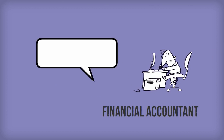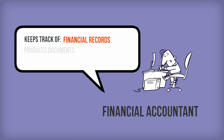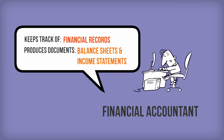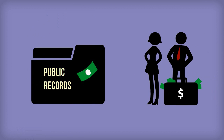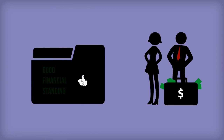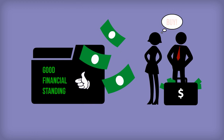As a financial accountant, Jim keeps track of the company's financial records and produces documents like balance sheets and income statements. These records are made available to the public so investors and creditors can know if the company is in good financial standing and then make decisions based on that information.